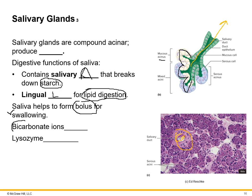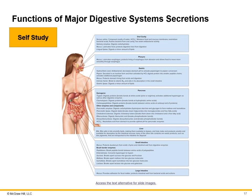Saliva also contains bicarbonate ions (HCO3-) that help regulate pH, and small amounts of lysozyme — a mild antimicrobial also secreted by lysosomes. To recap, saliva contains salivary amylase, lingual lipase, bicarbonate ions for pH regulation, and lysozyme as a mild antimicrobial. There is a self-study slide laying out all enzyme secretions of every gland in the digestive system — make a table listing the enzyme, the secreting gland, and its function.